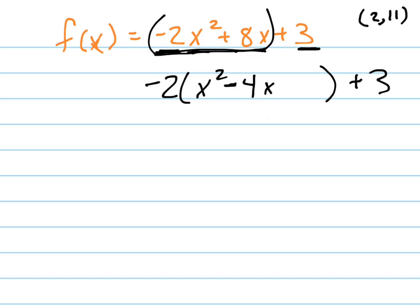Now the trick is to find out what number I have to put here. And that number is half of that squared. What's half of 4? Negative 2. What's negative 2 squared? Positive 4.